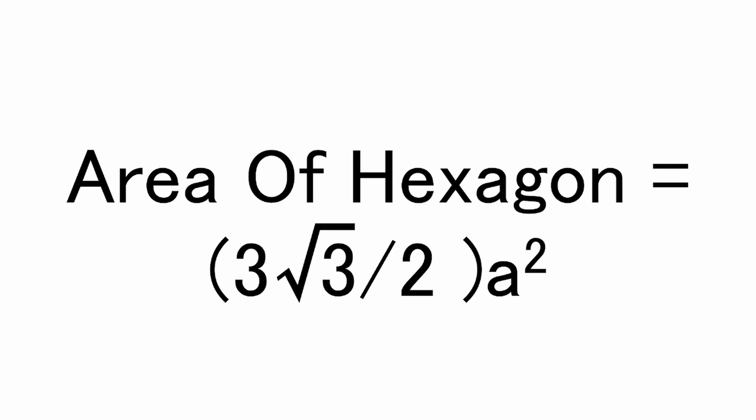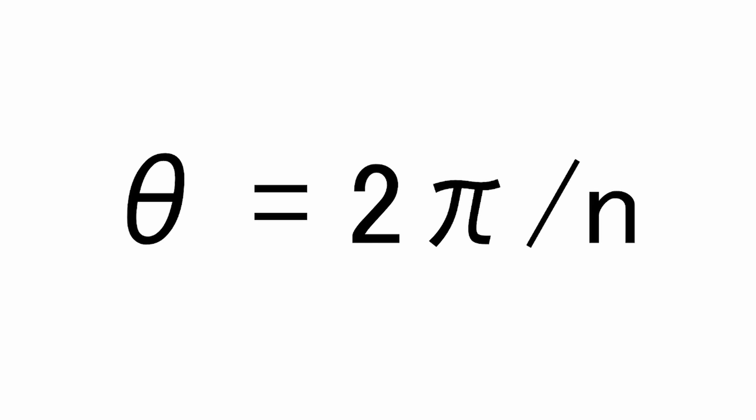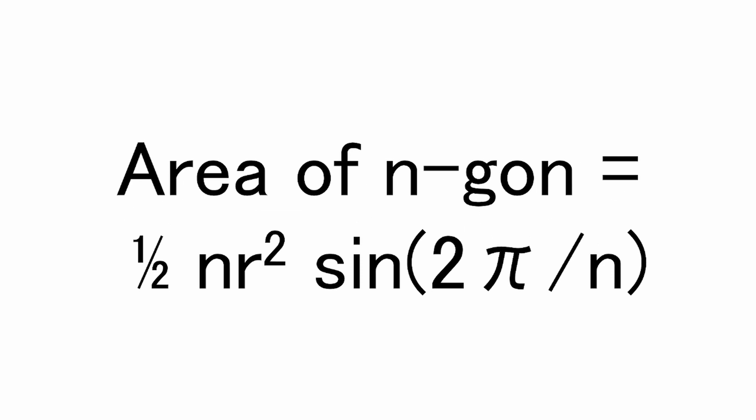By now, we should be able to spot a pattern. The number of sides, n, is equal to the number of isosceles triangles we can form. The unique angle of each of these isosceles triangles will be 2 pi divided by n. Hence, the general formula for an n-sided regular polygon is a half n r-squared, sine 2 pi over n.